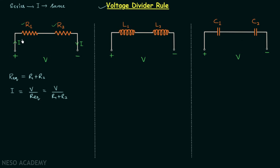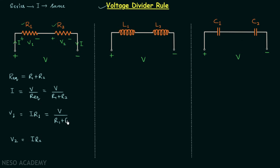The voltage across the first resistor is V1 and the voltage across the second resistor is V2. V1 equals current I multiplied by R1, and V2 equals current I multiplied by R2. Since I equals V over R1 plus R2, V1 equals V divided by R1 plus R2, multiplied by R1, and V2 equals V over R1 plus R2, multiplied by R2.